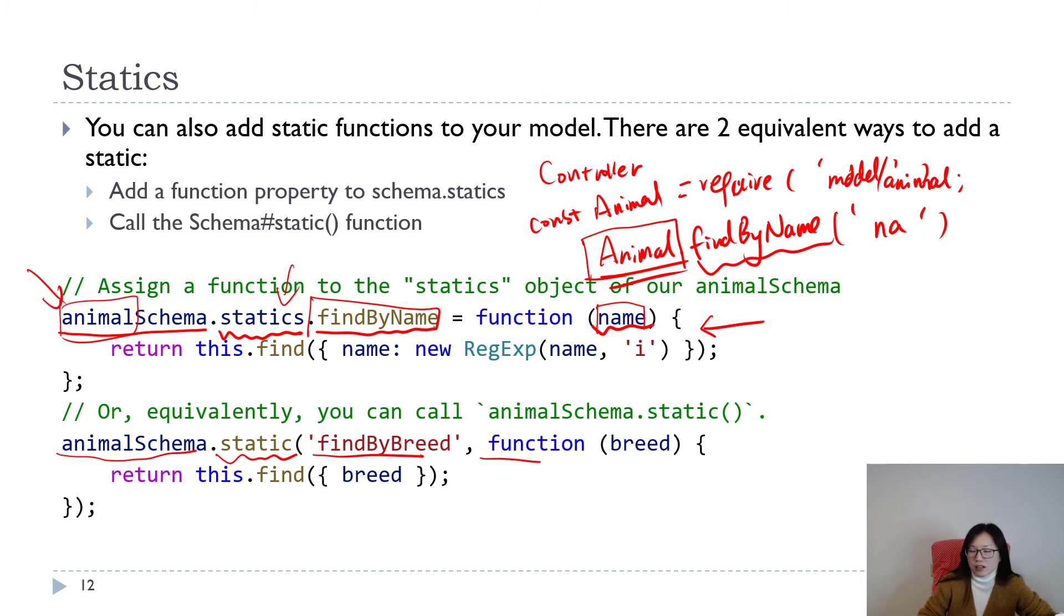They are equal. Personally I prefer this one because we're using the same way to create the instance methods. By the way, all those things are in your model. Your controller is just to use this method in your controller.